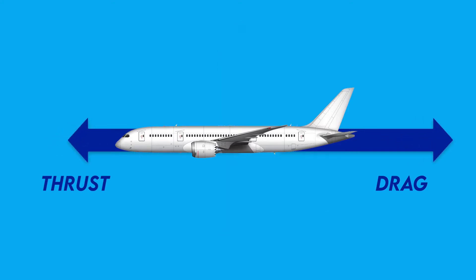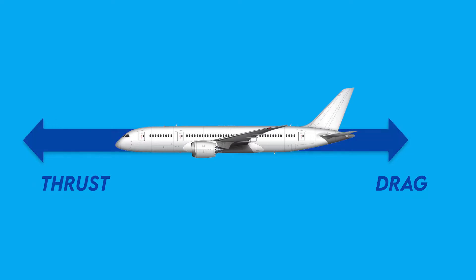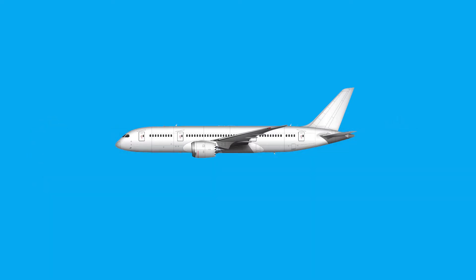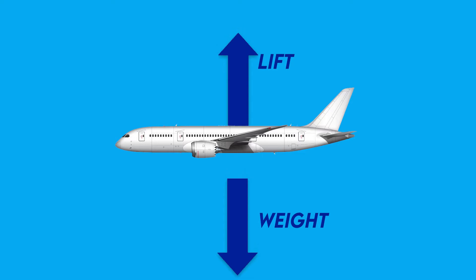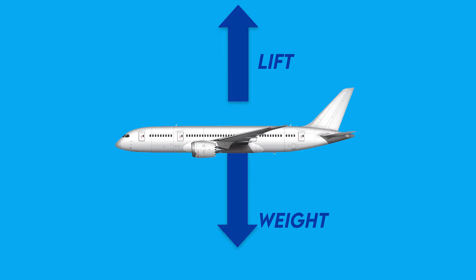Thrust and drag are the two opposite forces that determine how fast a plane can go. Similarly, lift and weight work against each other, impacting the plane's ability to go up and down.